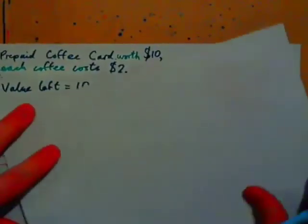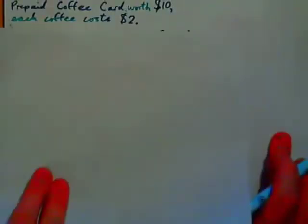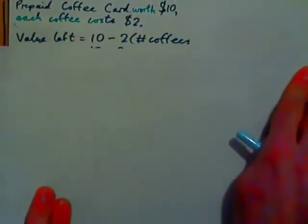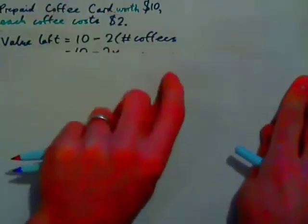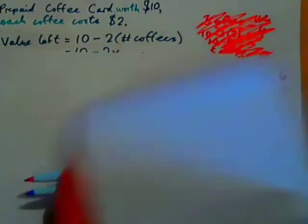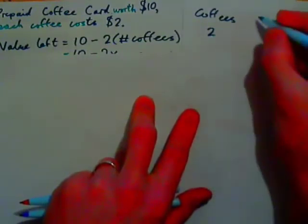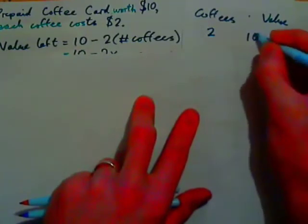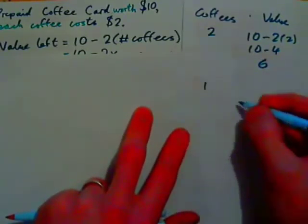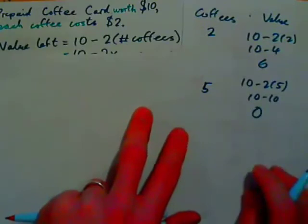Let's look at a real-life example. Say we have a prepaid coffee card where each coffee costs $2 and the initial value is $10. We can write: value = 10 minus 2 times the number of coffees. For example, with 2 coffees: 10 minus 2 times 2 equals $6 left. With 5 coffees: 10 minus 2 times 5 equals $0 left.